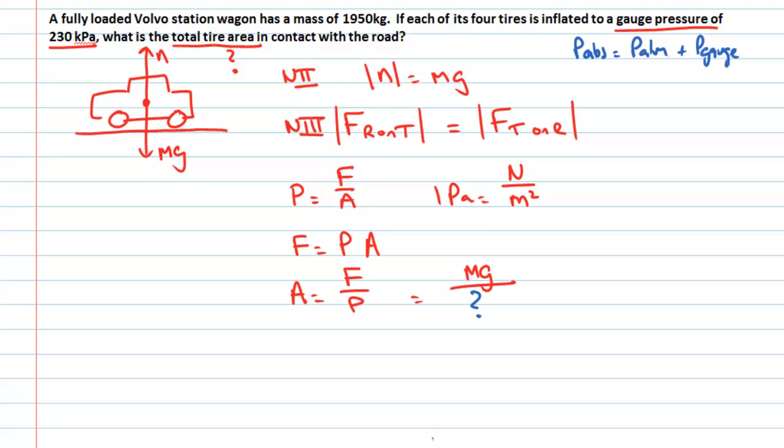So the gauge pressure is the pressure above atmospheric pressure. So which one do we use? Do we need to use the gauge pressure or maybe do we need to add atmospheric pressure to it and use the absolute pressure?